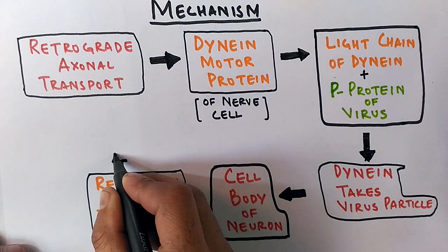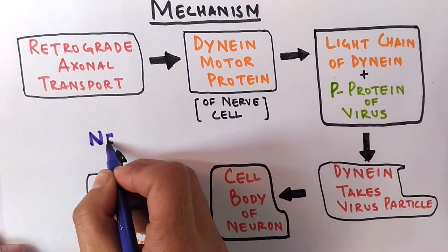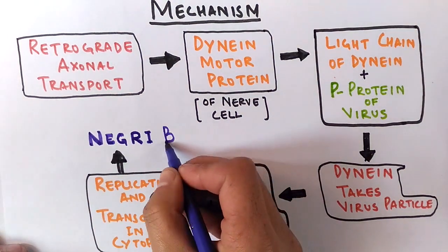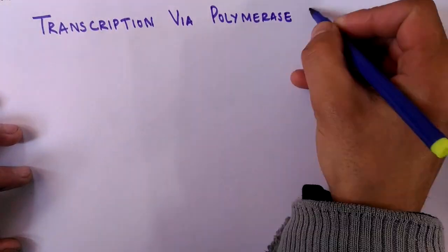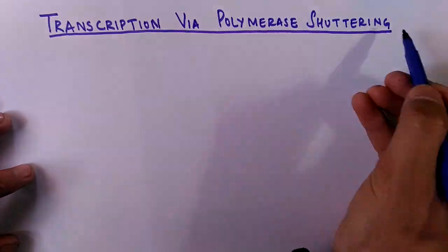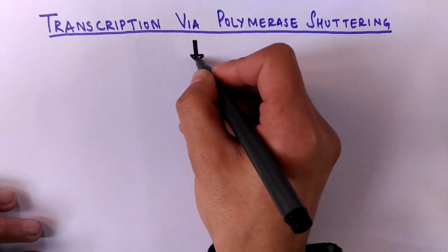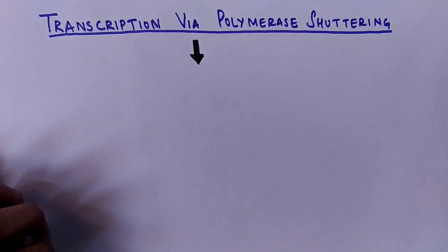The site in cytoplasm where replication and transcription takes place is termed as Negri body. As I already told you, the transcription of this virus is via polymerase stuttering. It's a process by which a polymerase transcribes nucleotides several times.